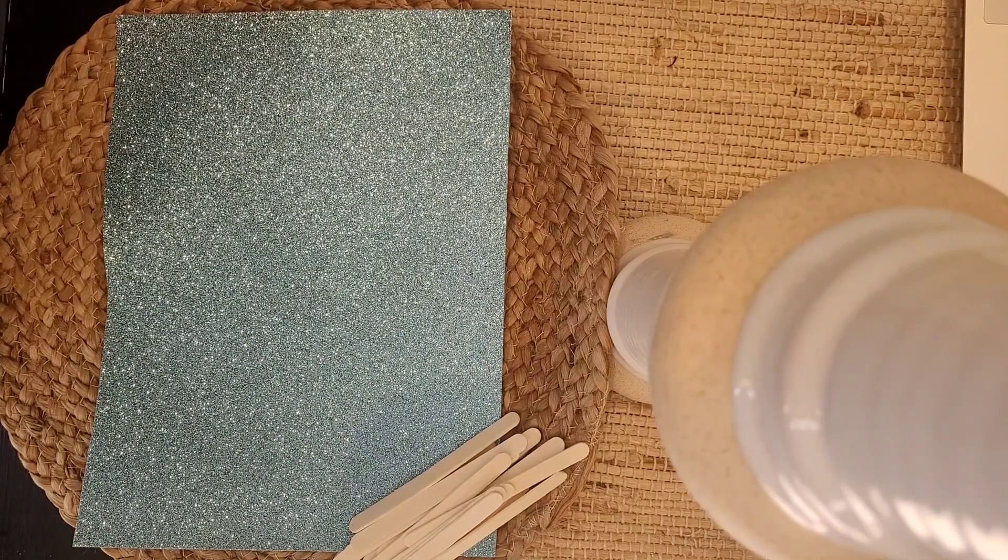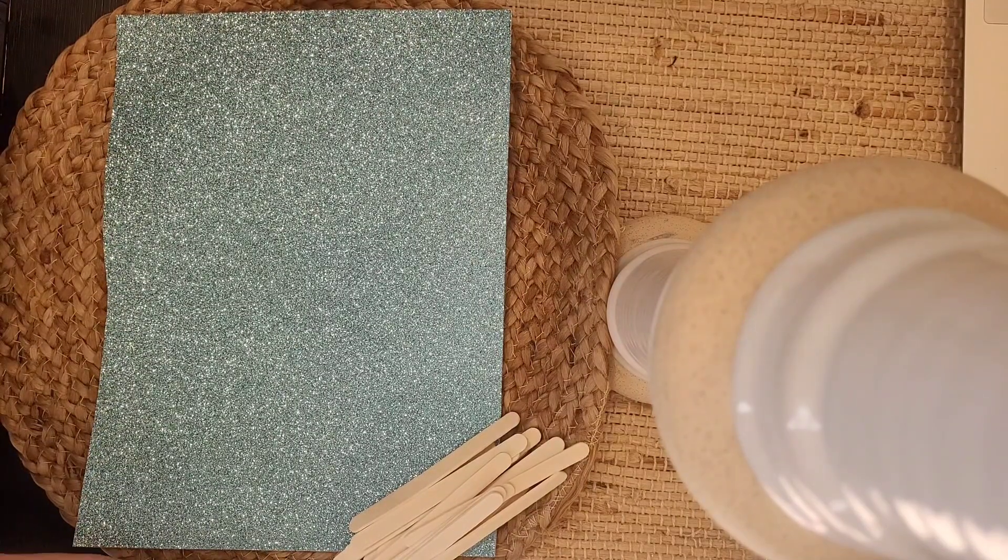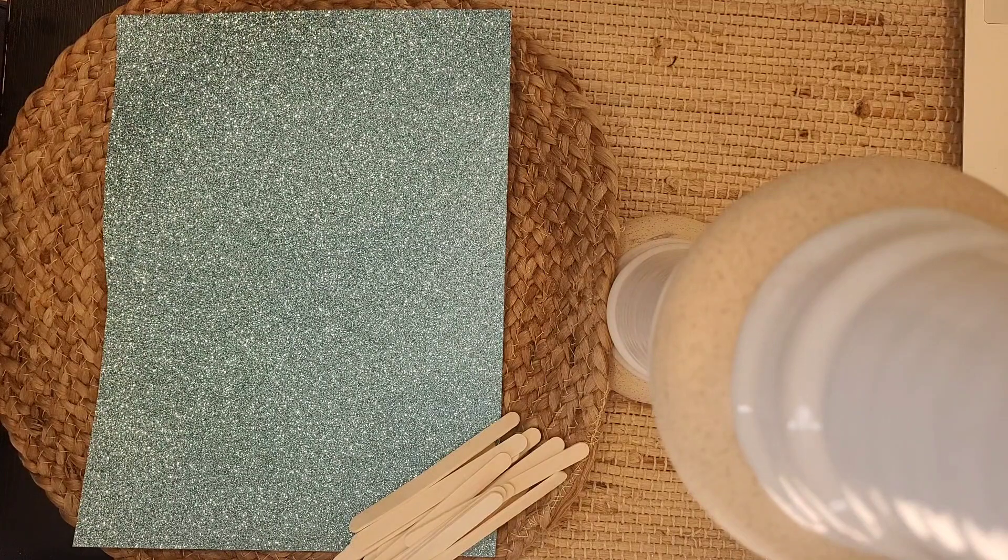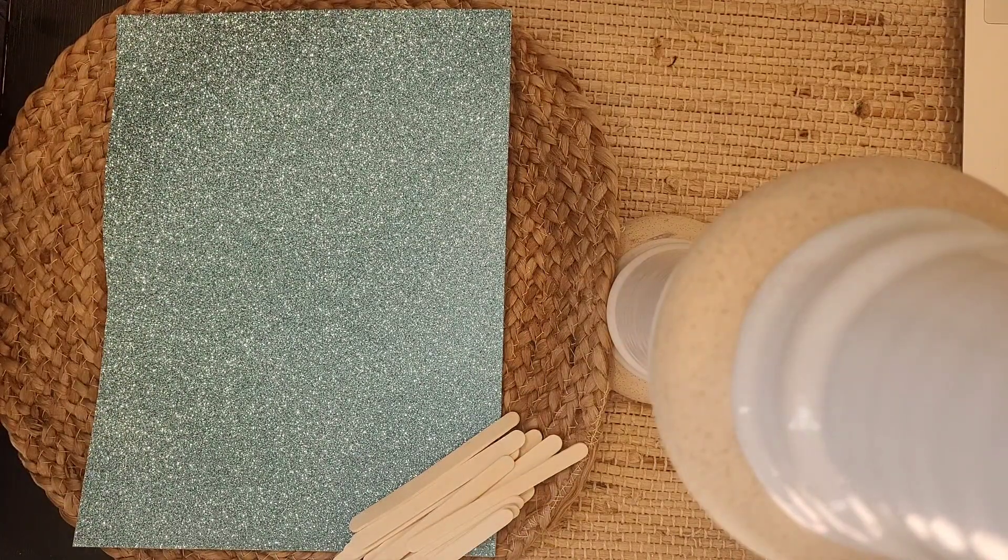Okay, guys, I'm back. Did you find your popsicle sticks? I also found a nice glitter blue paper to create our shapes with. So the first shape I want you to make is I want you to make a square.